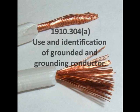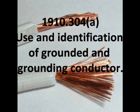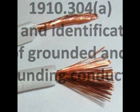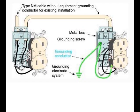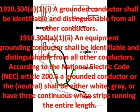In the next sub-part, we will be talking about the identification of grounding and grounding conductors. Under the Wiring Design and Protection section, it says: a grounding conductor shall be identifiable and distinguishable from all other conductors. According to the National Electric Code, the NEC, Article 200.6, a grounded conductor or the neutral shall either be white, gray, or have three continuous white strips running the entire length.